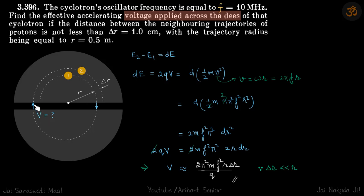When the trajectory radius is r, the next gap is Δr. We need to find the potential difference. Energy difference between these two curves will be dE, and it is equal to 2qV, which we can write as d(½mv²). v is ωr for a charged particle rotating, and ω is 2πf because the frequency of oscillator is same as frequency of the circling charge.